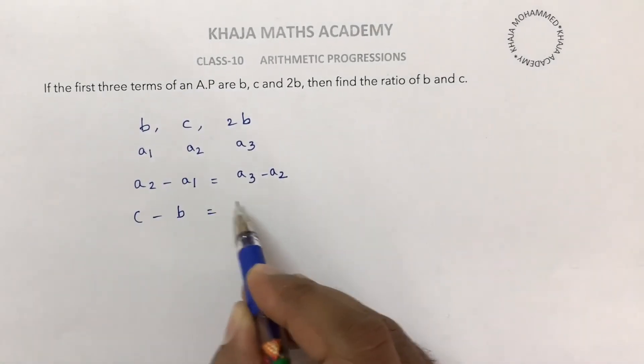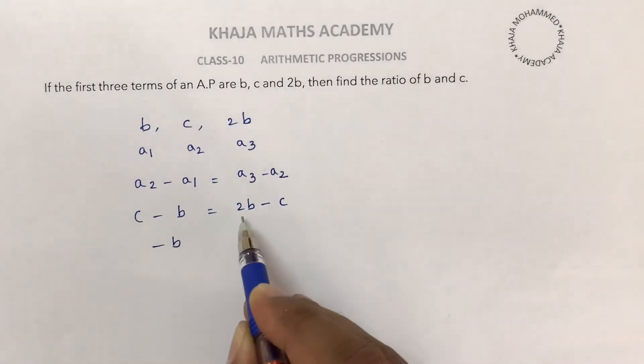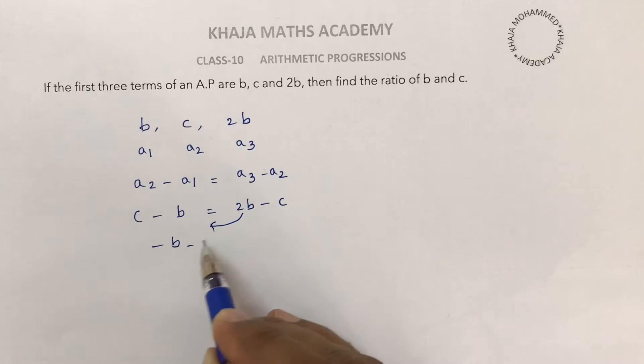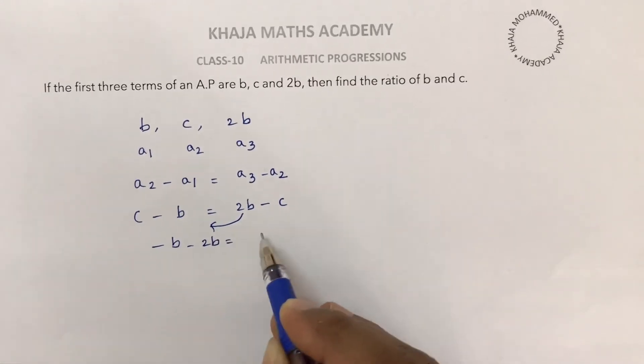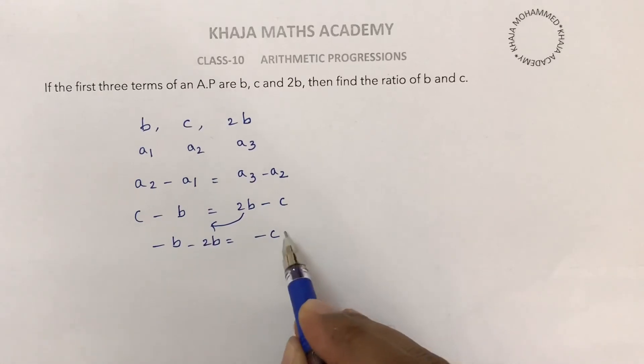B equals 2B minus C. So bring minus B to the LHS. On transposing it will become minus 2B. Here is minus C. This plus C, if I transpose it will become minus C.